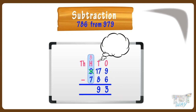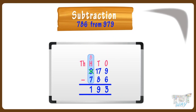Now, subtract 7 from 8. 8 minus 7 equals 1. Write 1 in the answer at hundreds place. Yay, we did it! 193 is our answer.